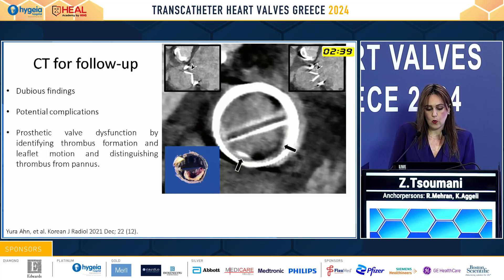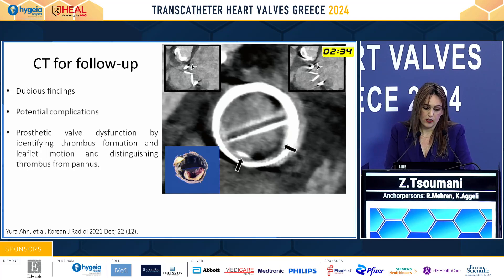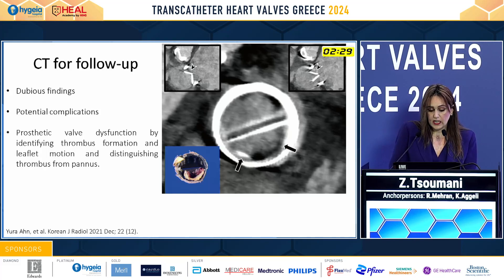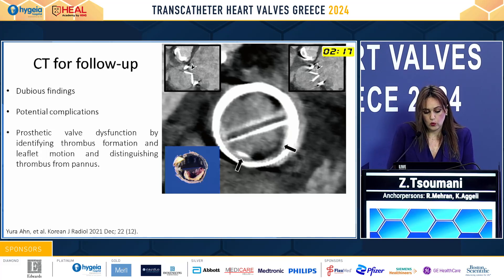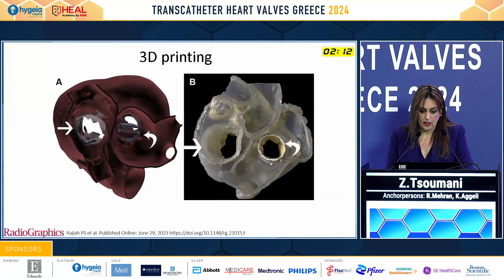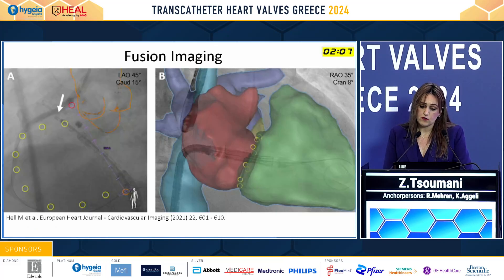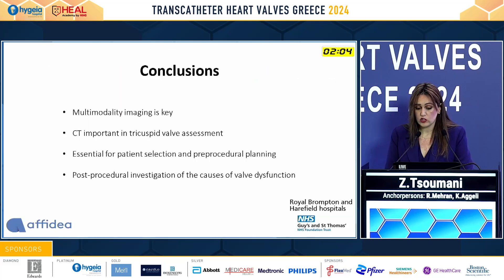However, this can be limited because of significant blooming artifacts from the leads, and echo might be much better in those cases. We can use CT for follow-up, especially when we have increased gradients through the valve. We can do functional 4D imaging to see how well the valve is opening and closing, and to identify thrombus formation or leaflet thrombosis. We can also use 3D printing, which is an interesting area, as well as fusion imaging that may help during the procedure.